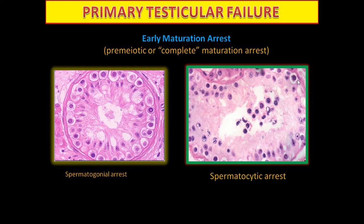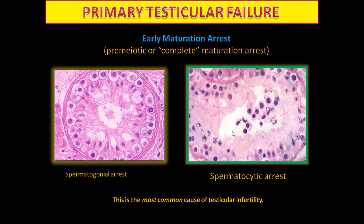Spermatocytic arrest: we find spermatogonia and primary spermatocytes — no spermatids, no spermatozoa. It is called early maturation arrest or pre-meiotic arrest, because the spermatogonia and primary spermatocytes are diploid, containing 46 chromosomes. It is the most common cause of testicular infertility.